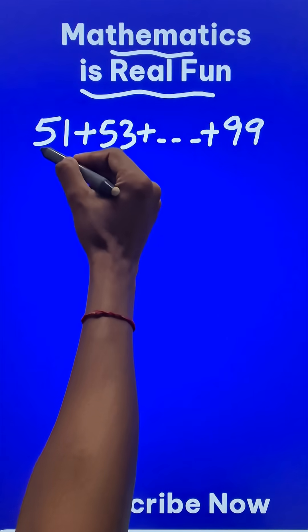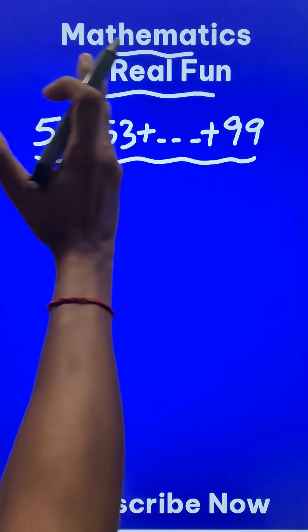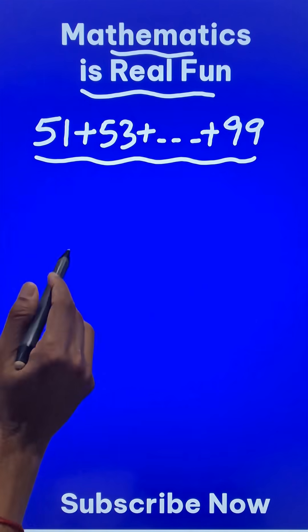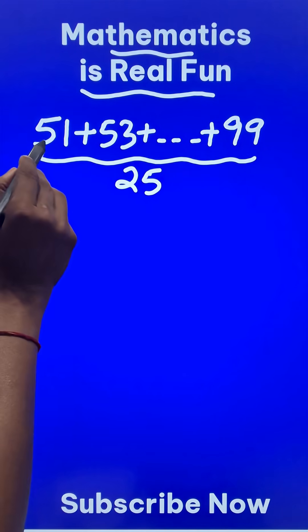Now we just need to know how many odd numbers are these. From 51 to 99, if you know that there are 50 odd numbers from 1 to 100, so from 51 to 99 they are going to be exactly 25 odd numbers.